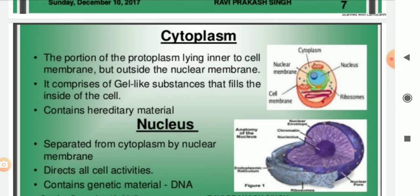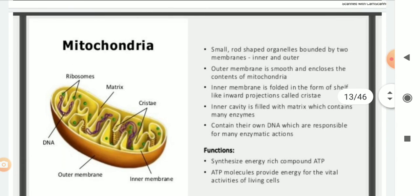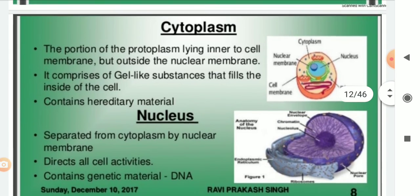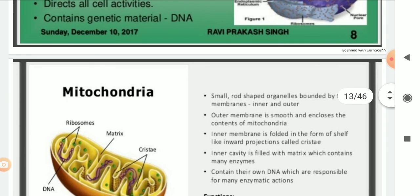Inside the nucleus, we have several other things. There is a spherical body called the nucleolus. Inside it there are thread-like structures called chromosomes. Over the chromosomes we have some minute structures called genes. The genes are responsible for the characters which pass from parents to the next generation.